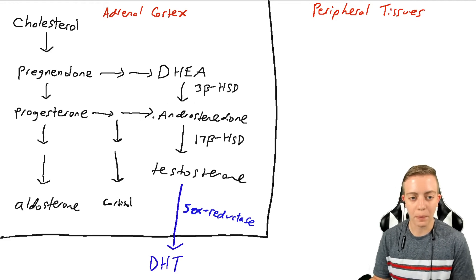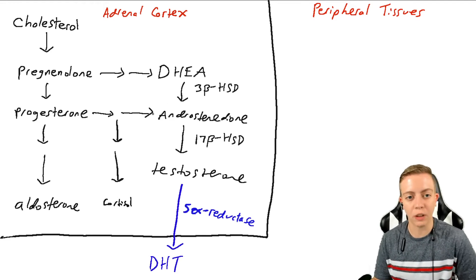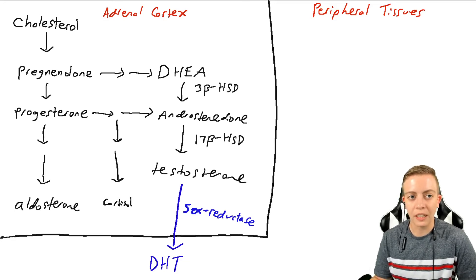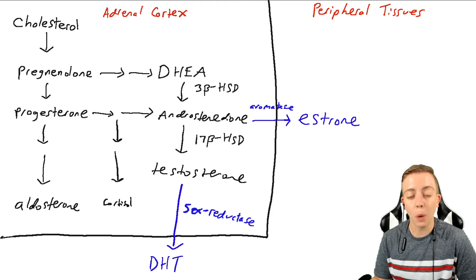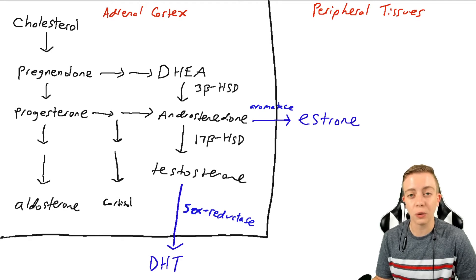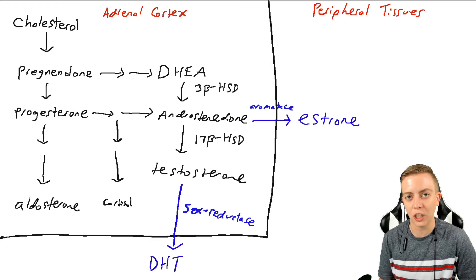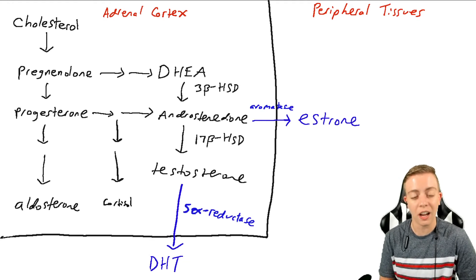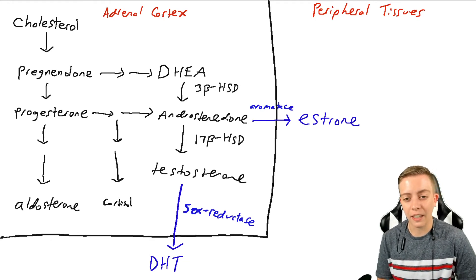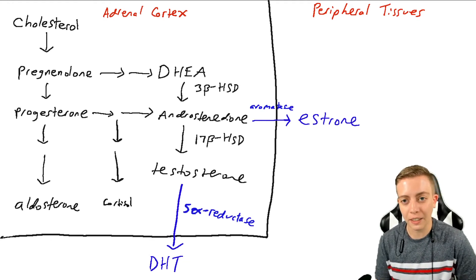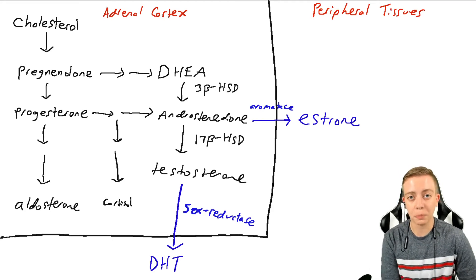Androstenedione leaves the adrenal gland and is converted by aromatase to estrone. If you remember, estrone is not the most potent but not the least potent form of estrogen — it is our estrogen of menopause, and it is peripherally converted, as we can see here, by aromatase.